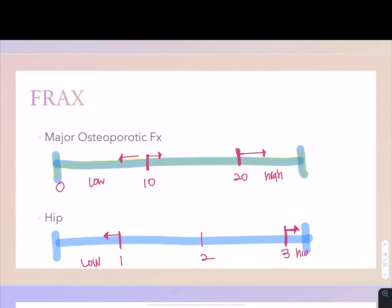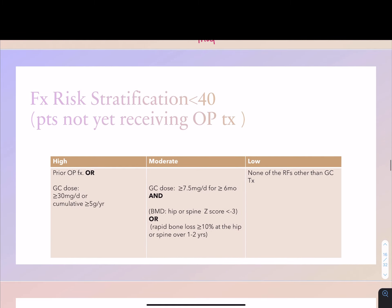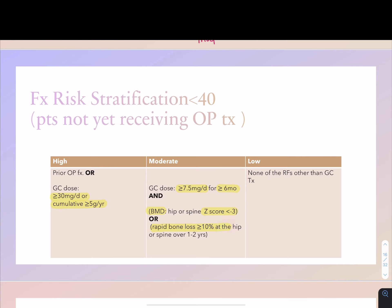For patients under 40, prior osteoporotic fracture and glucocorticoid dose greater than 30 mg/day or cumulative 5 grams per year is high-risk. There is also an interesting moderate-risk criteria: glucocorticoid dose of 7.5 milligrams per day or greater for more than six months, plus BMD showing hip or spine Z-score less than negative 3, or rapid bone loss of 10% or more at the hip or spine over one to two years. If none of these risk factors are present, the patient is low risk.